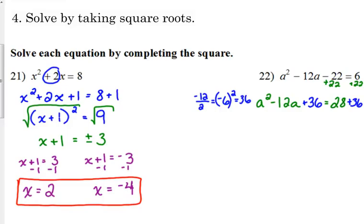Okay, so the left side, we need to factor. It's going to factor into a minus 6 squared. The right side, we're going to simplify. 28 plus 36 is 64.